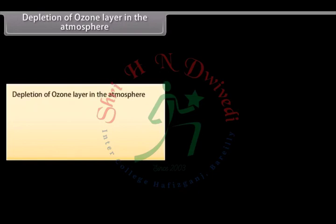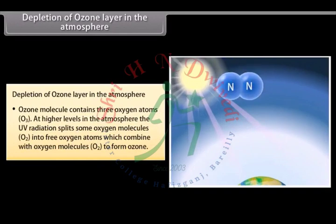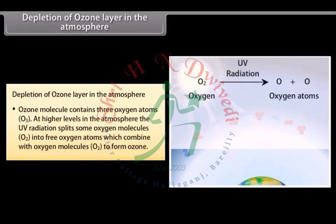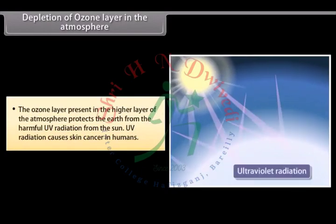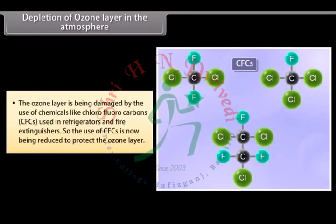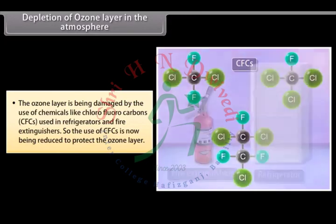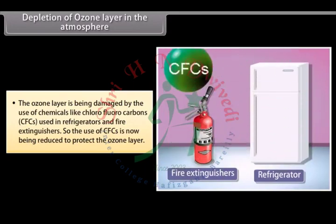The ozone molecule contains three oxygen atoms (O3). At higher levels in the atmosphere, UV radiation splits some oxygen molecules (O2) into free oxygen atoms, which combine with other oxygen molecules to form ozone. The ozone layer protects the earth from harmful UV radiation from the sun, which causes skin cancer in humans. The ozone layer is being damaged by chemicals like chlorofluorocarbons (CFCs), used in refrigerators and fire extinguishers, so the use of CFCs is now being reduced to protect the ozone layer.